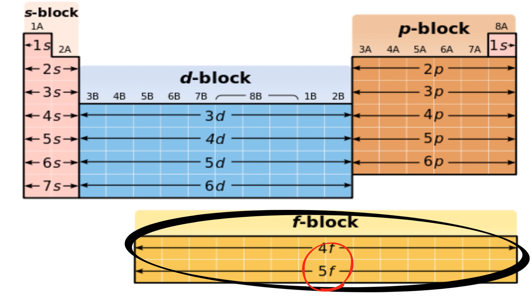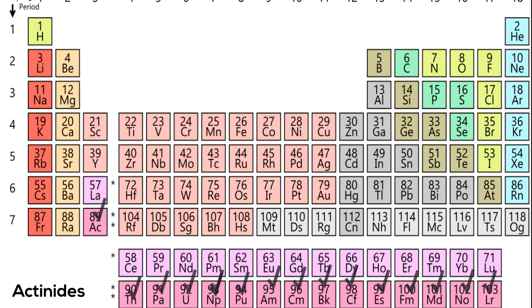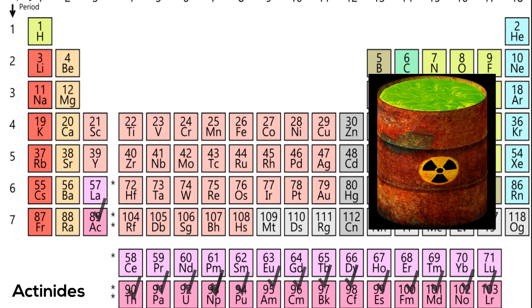Actinides are elements 89 through 103 and are transition metals. All atoms of actinides are radioactive or unstable.